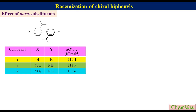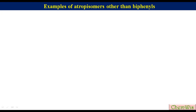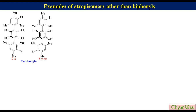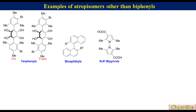The last topic: examples of atropisomers other than biphenyls. Biphenyls are not the only molecules showing atropisomerism; there are different classes of molecules. These include terphenyls, which show geometrical as well as optical isomerism; binaphthyls; N,N'-biphenyls; and N-phenyl phenyls.